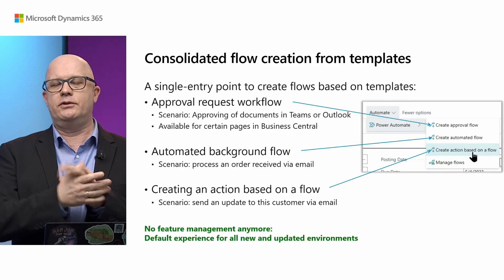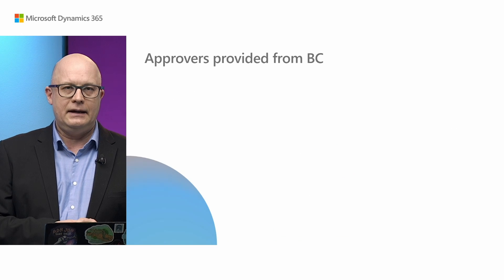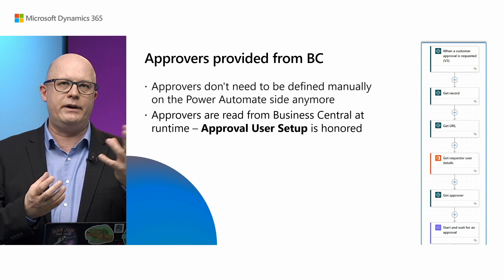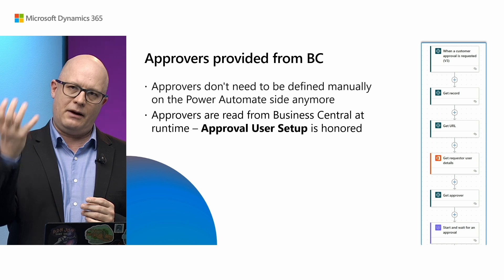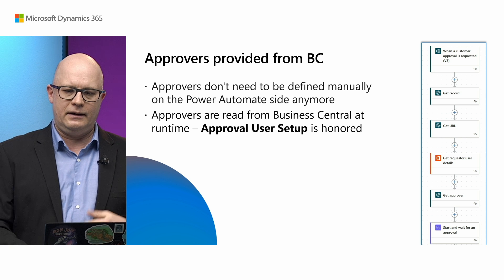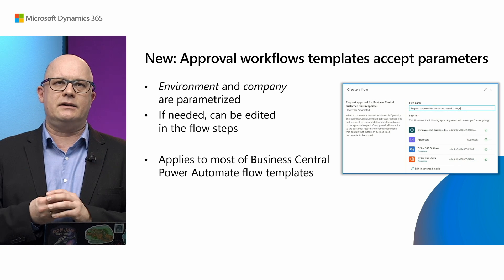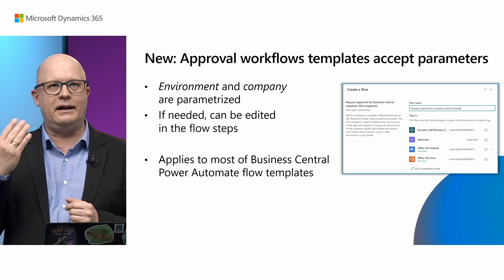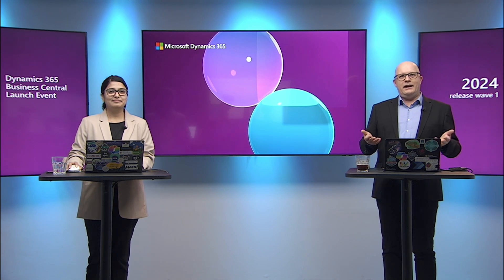Whatever option you choose, you will end up looking at different templates from our catalog. We have improved plenty of areas in our experience and our templates. The first thing you will notice is that we have improved the approval workflows — we have added an ability for Power Automate to access data from Business Central for approvers and pull it into the flow. We have also improved workflows and templates based on environment and company, so this information is now sent from Business Central to Power Automate.